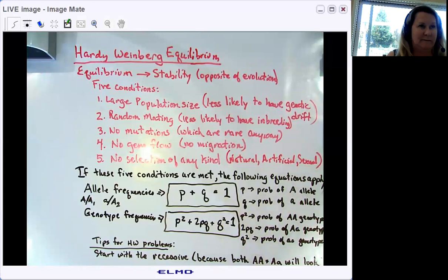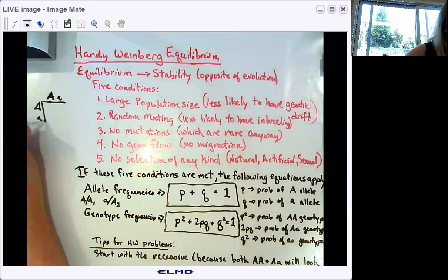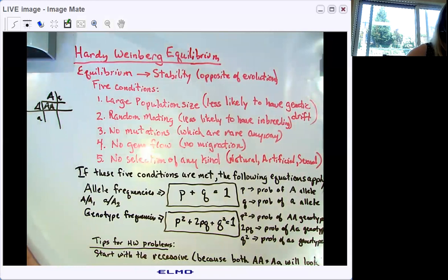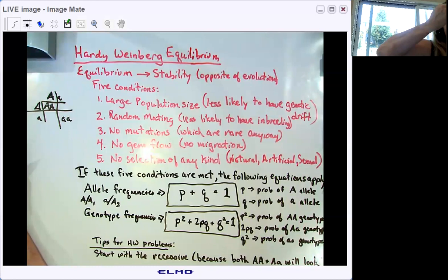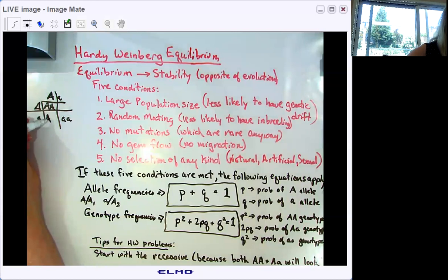If you have two heterozygous parents, dad is big A little A, mom is big A little A, and you do the simple Punnett square, there's only one way to make a homozygous dominant individual - you have to get the dominant allele from both parents. There's only one way to make a homozygous recessive individual - you have to get the recessive allele from both parents. But there are two ways to make a heterozygous.